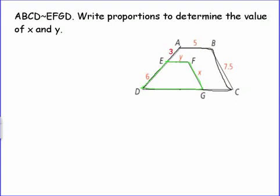Before we go on, I want to make sure we understand what it means for two polygons to be similar. That's what that little squiggly represents - saying ABCD is similar to EFGD. Let's look back at our definition of similar polygons.